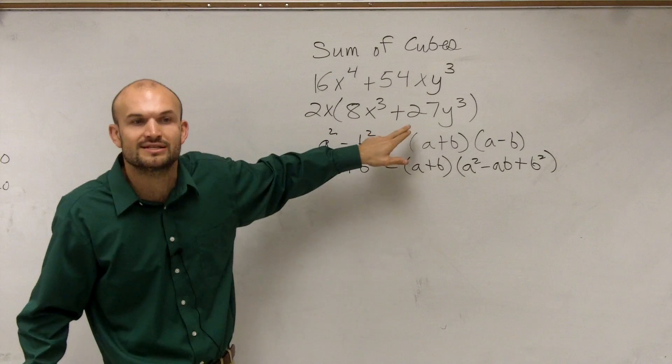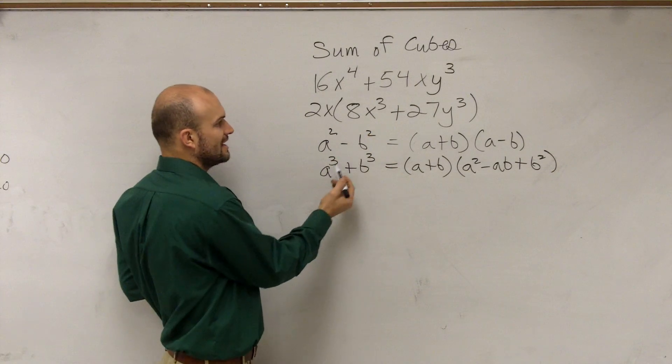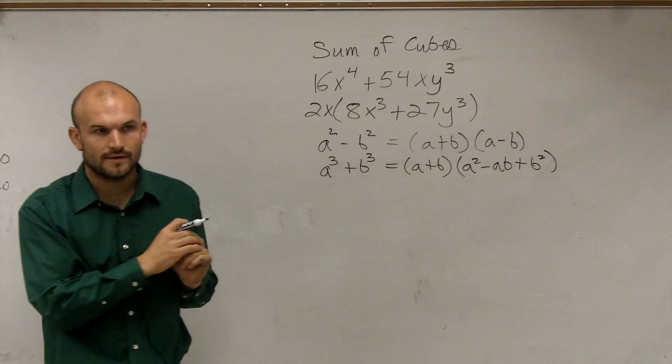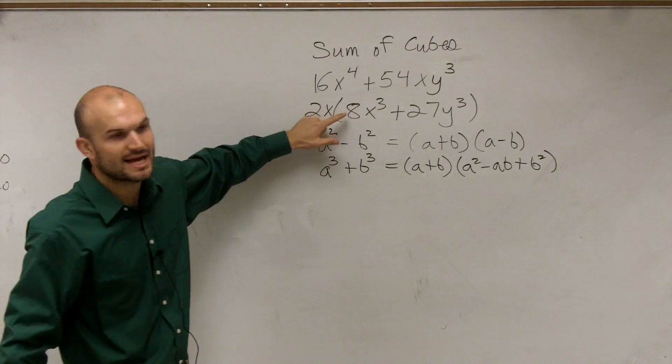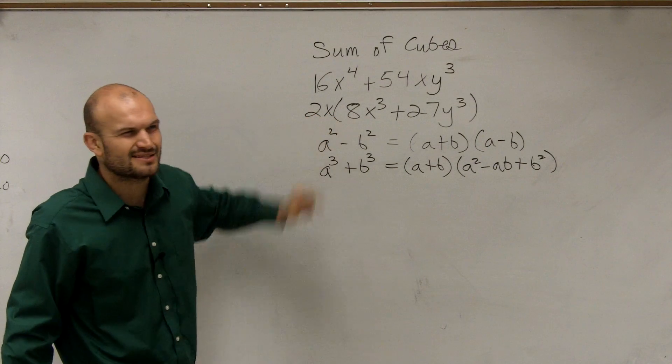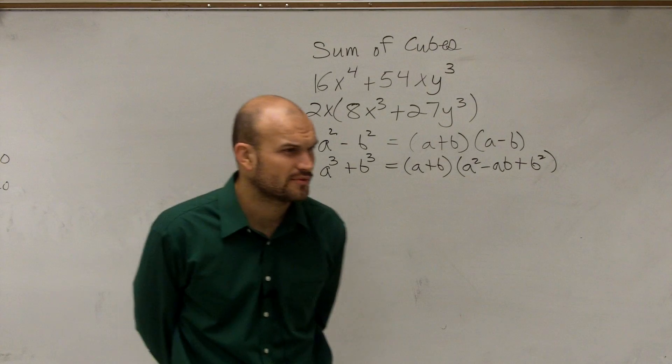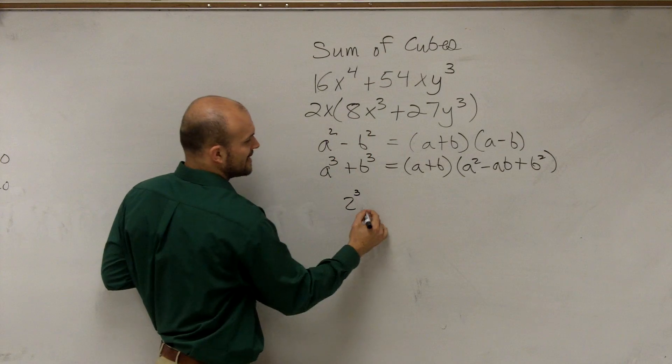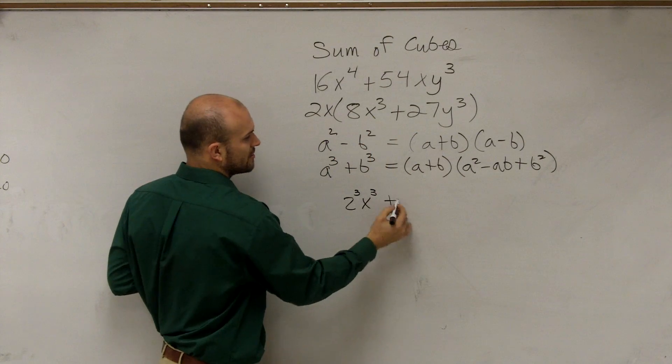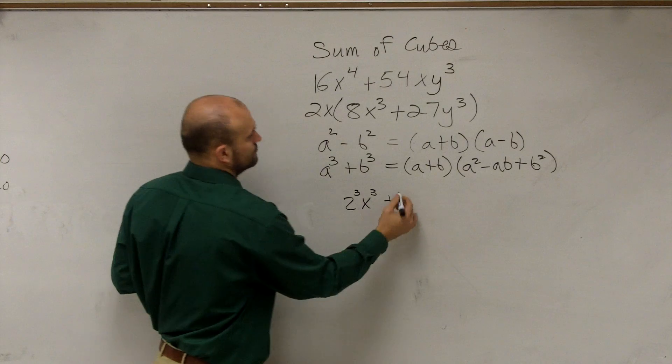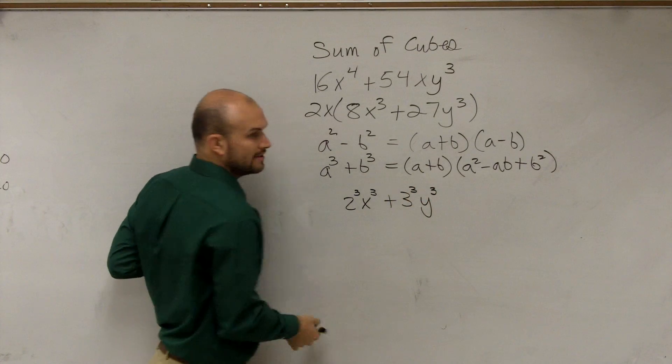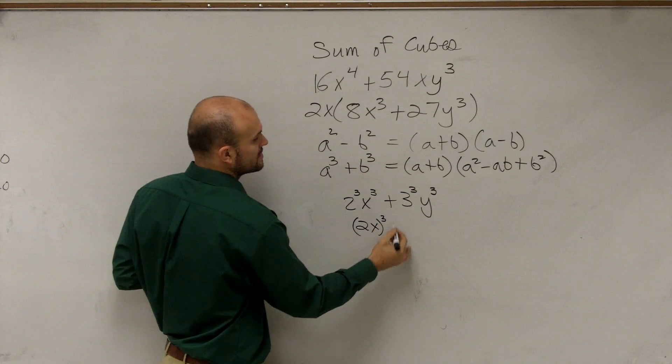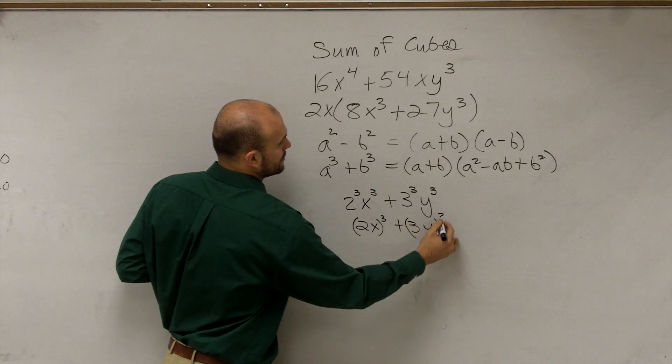I said sum of cubes because obviously we're doing addition. So what I need to do is, can I write this as a cubed plus b cubed? Well, let's go and take a look. Can we write 8 as a cube number? Because that sum number multiplied by itself three times? 2. So we could say this is 2 cubed. x we can obviously write as x cubed. 27? Can we write that as a cube number? 3. Then by applying our exponents, we could say 2x cubed plus 3y cubed.